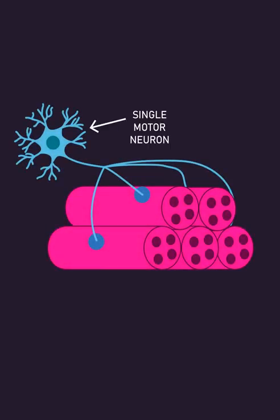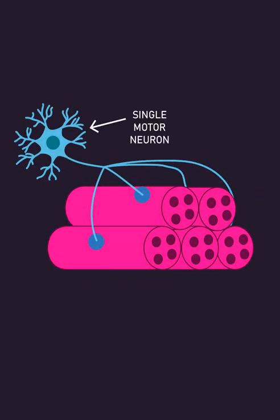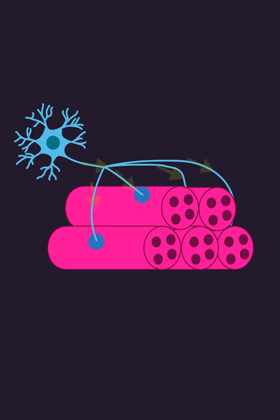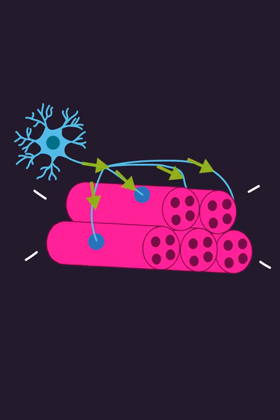A motor unit refers to a single motor neuron and the multiple muscle fibers it supplies. When the single motor neuron sends electrical signals to the muscle fibers, they produce force.